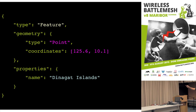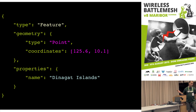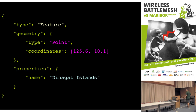GeoJSON has a geometry that represents either a point, a polygon, a line, a multi-line, or a collection of geometries. Then you have a properties object where you can stuff as many properties as you want — needed for visualization or other stuff. This is a very simple example; there are more complex examples too.